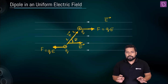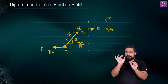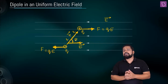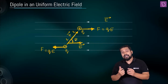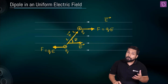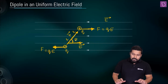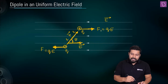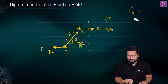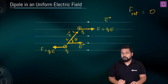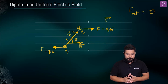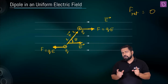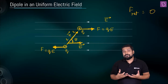So if you have a uniform electric field and you take a dipole, placing it such that the dipole moment vector and the electric field make an angle theta with each other — then we know the positive charge is going to experience a force along the direction of the electric field, and the negative charge is going to experience a force opposite to the direction of the electric field. If you treat this entire dipole as one system, the net force on the system is equal to zero. We are seeing two equal and opposite forces whose line of action is different.